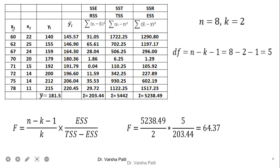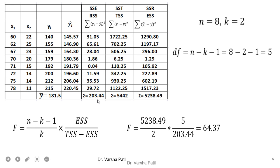We prepare a table with x1, x2, and yi given. From the regression equation, we find y-cap by substituting x1 and x2 values. Then we find RSS and ESS. RSS is the residual sum of squares — the difference between actual and predicted values, squared and summed — giving 203.44. ESS is the explained sum of squares, the difference between the predicted value and the average y, squared and summed. TSS equals RSS plus ESS.